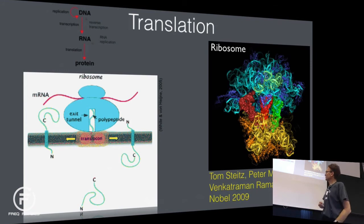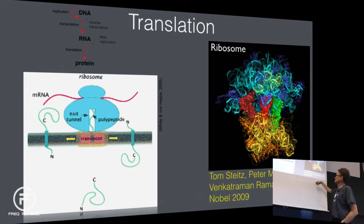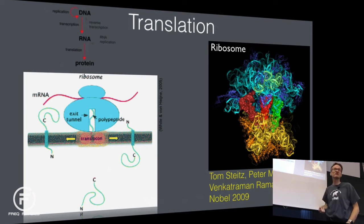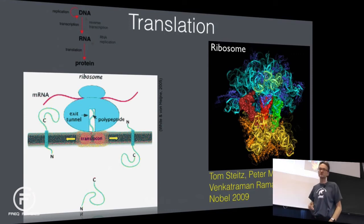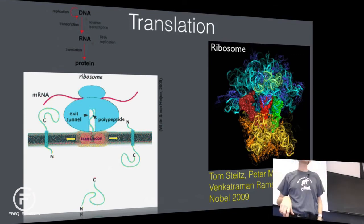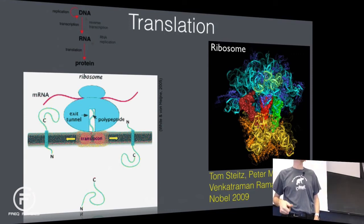The Nobel Prize in 2009 was awarded to Tom Steitz, Peter Moore, and Venki Ramakrishnan for X-ray structures of the ribosome. So we're talking about fairly modern science here — it's only 15 years ago that these structures were not available at all.